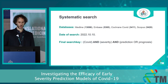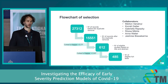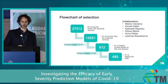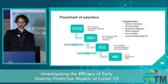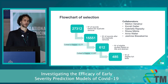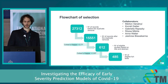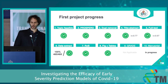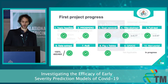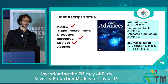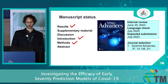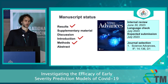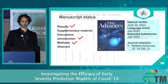Our search key yielded around 27,000 results, and we ultimately selected close to 500 texts for data extraction. We've completed all the analysis, the target journal is Science Advances, and we're close to completing the manuscript.